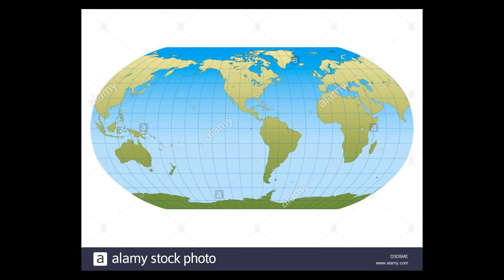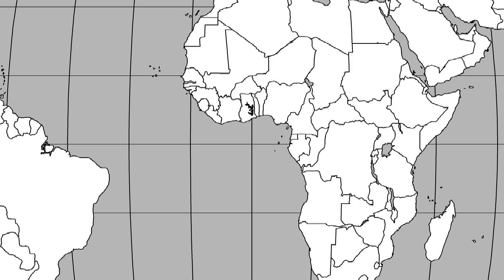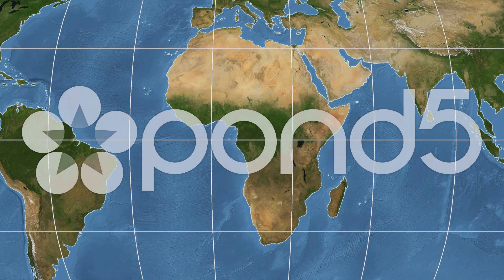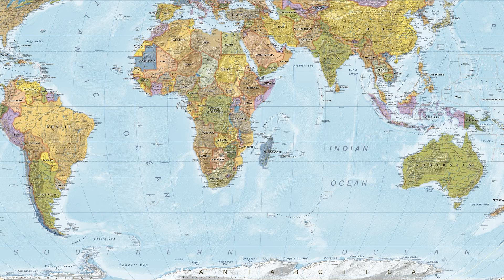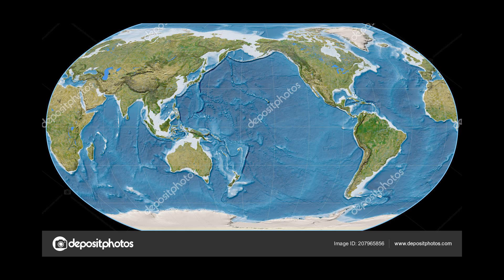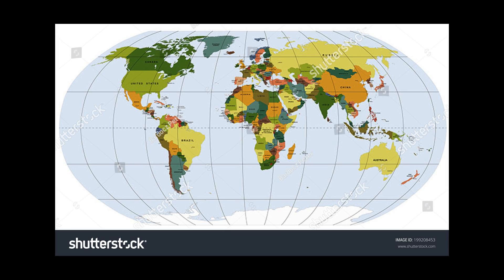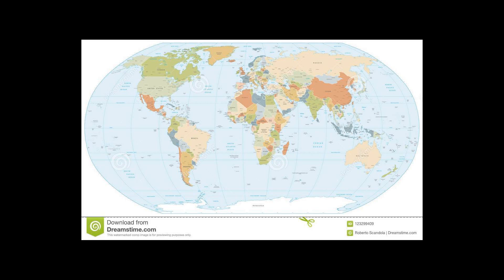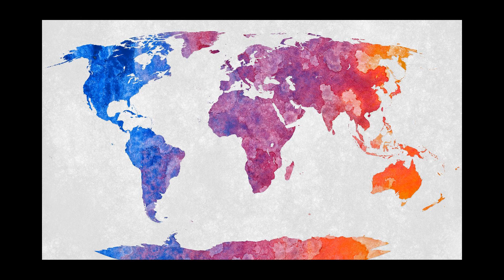Robinson published details of the projection's construction in 1974. The National Geographic Society (NGS) began using the Robinson Projection for general-purpose world maps in 1988, replacing the Van der Grinten Projection. In 1998, NGS abandoned the Robinson Projection in favor of the Winkel-Tripel Projection, as the latter reduces the distortion of land masses as they near the poles.